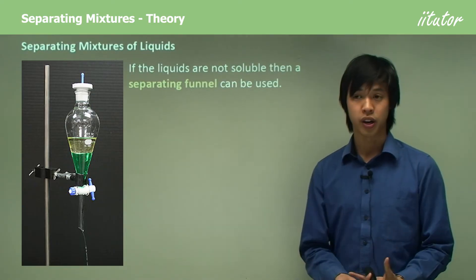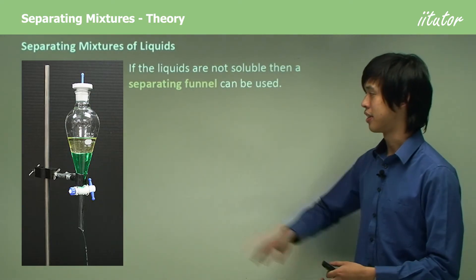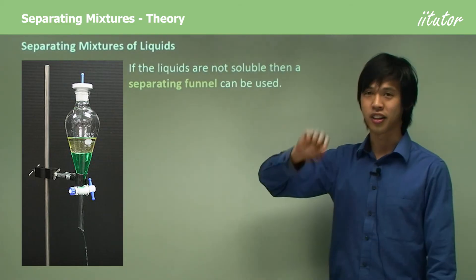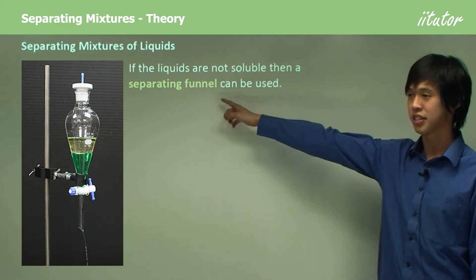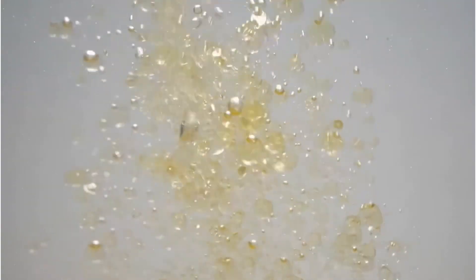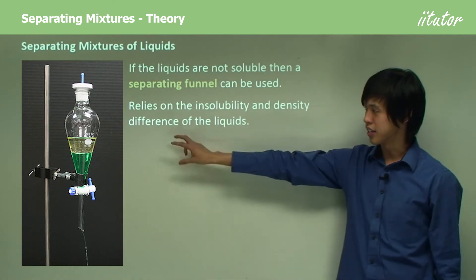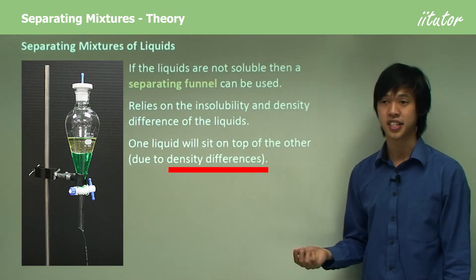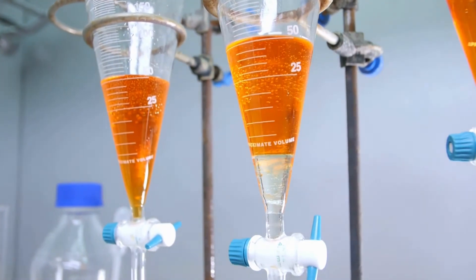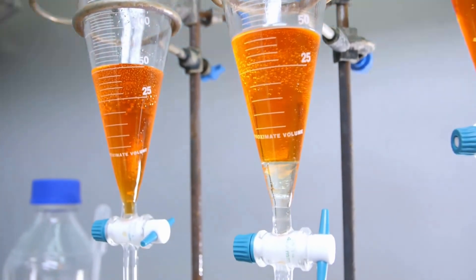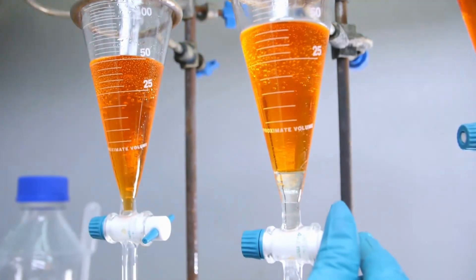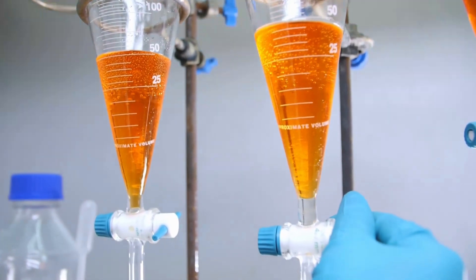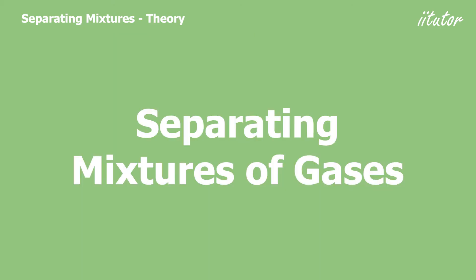That was for two liquids that could dissolve in one another. But what about two liquids that can't dissolve in one another — like oil and water? Oil sits on the top of water, and the bottom is water. We can use what's called a separating funnel, which relies on the two liquids being insoluble and one being less dense than the other. Water is more dense than oil, so it sits on the bottom; oil is less dense, so it sits on the top. You open the valve at the bottom, the denser liquid drains out, and you close the valve just before the oil is reached.